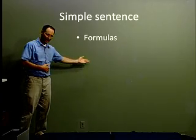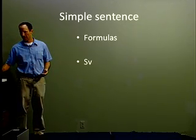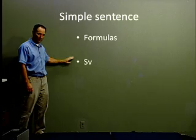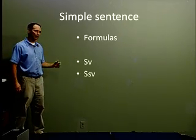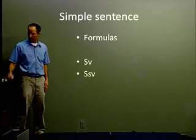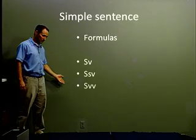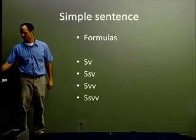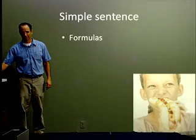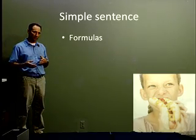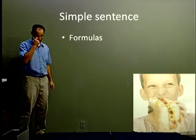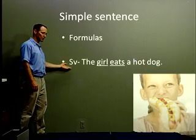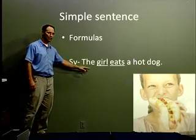Simple sentences are one independent clause, but when I have an independent clause, it could have more than one subject, and it could have more than one verb as well. So I have certain formulas for simple sentences. The first one is just where I have one subject and one verb. I could also have two subjects and one verb. I could have one subject and two verbs. Another possibility: two subjects, two verbs. Let's look at some examples. If we look at the picture, we see the child is eating a hot dog. So we have subject, then verb — just one subject, one verb. The girl eats a hot dog.